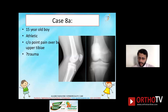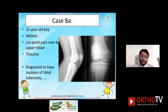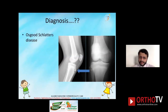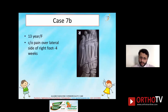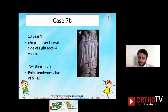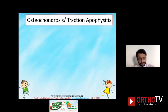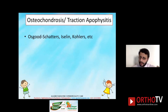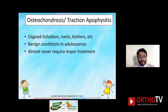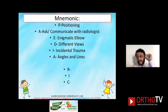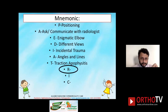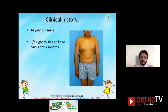T — Traction Apophysitis. A 15-year-old athletic boy with pinpoint pain over the upper tibia and a query history of trauma was diagnosed with avulsion of the tibial tuberosity — this is Osgood-Schlatter disease. A 13-year-old female with pain over the lateral side of the foot since four weeks, query twisting injury, and point tenderness over the base of the fifth metatarsal — this is Iselin's disease. These are osteochrondroses or traction apophysitis — Sever's, Iselin's, Osgood-Schlatter — benign conditions in adolescence that almost never require major treatment but are many times mistakenly diagnosed as fractures.